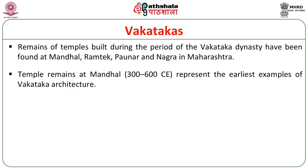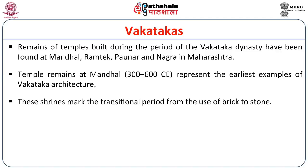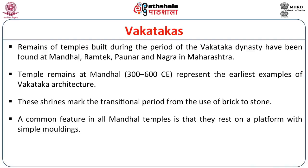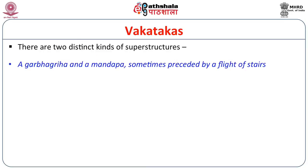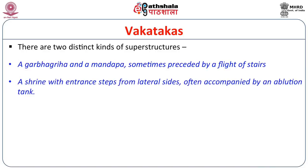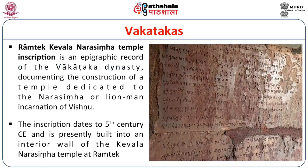The temple remains, especially at Mandal between 300 and 600 CE, represent the earliest examples of Vakataka architecture. These shrines mark the transitional period from brick to stone temples. A common feature in all the Mandal temples is that they rest on a platform with simple mouldings and there are two distinct kinds of superstructures — a Garbha Greha and a Mandap — sometimes preceded by a flight of stairs and a shrine with steps from the lateral sides, accompanied by an ablution tank. The Ramtek Kevala Narsimha temple inscription is an epigraphic record of the Vakataka dynasty. This temple is dedicated to the Narsimha avatar of Vishnu, the Lion Man.